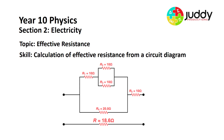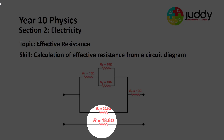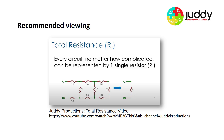Welcome physics folk to today's video. We'll be looking at Year Turn physics, section 2 electricity, and our topic is effective resistance. The skill we'll be looking at is calculation of effective resistance from a circuit diagram. In front of you, you can see a circuit diagram composed of some series components of resistors and some parallel components. What we're trying to do is work out what single resistor can effectively replace the entire circuit shown above. It is recommended that you watch my total resistance video before attempting the following questions.